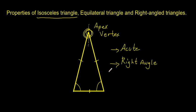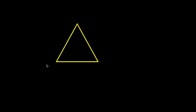This is an equilateral triangle, and with an equilateral triangle it's pretty straightforward. All three of the sides are going to be of equal size, and because the sides are all the same, it means that all the internal angles are the same as well.